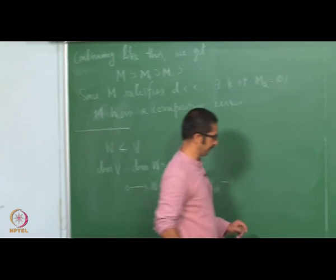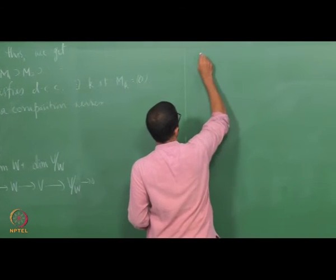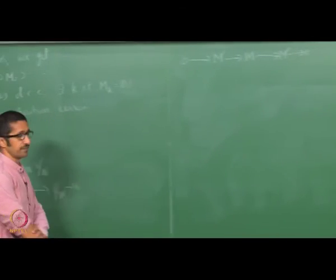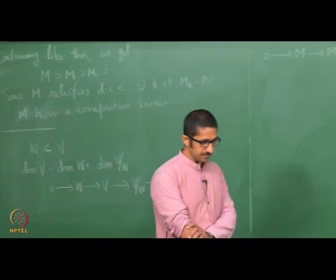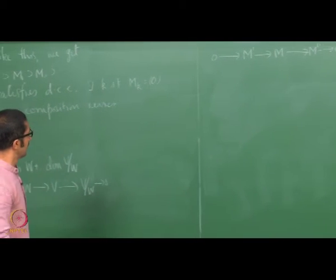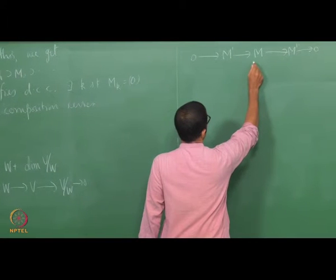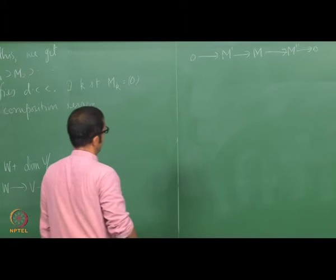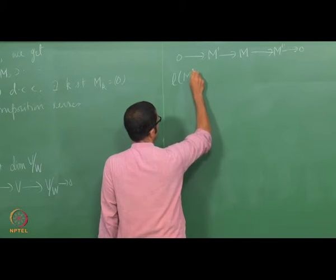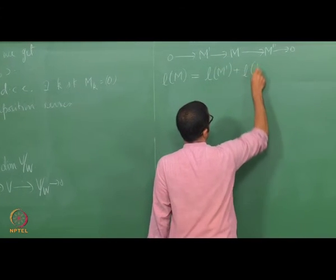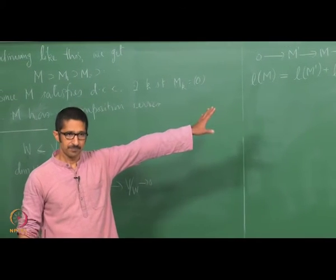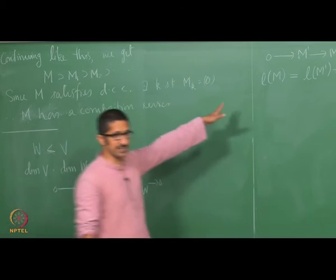Is this true for modules? Suppose I have a short exact sequence 0 → M' → M → M'' → 0, where all modules have finite length. Is it true that length of M equals length of M' plus length of M''? To show this, I only need to produce one composition series of M with length equal to the sum.